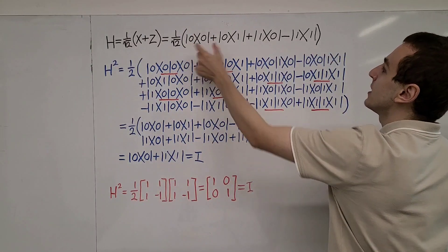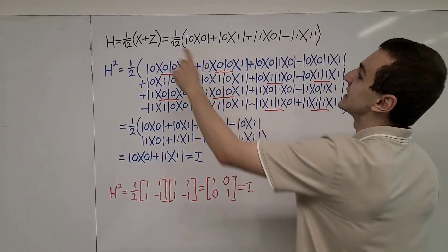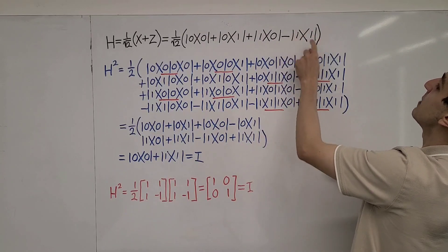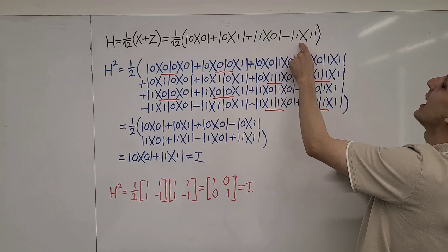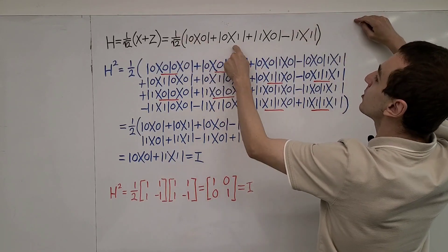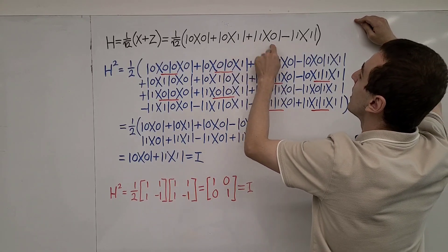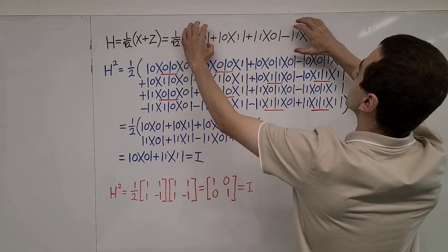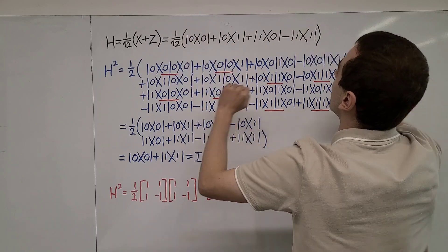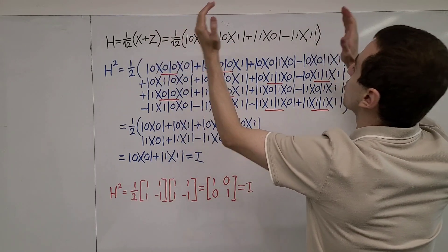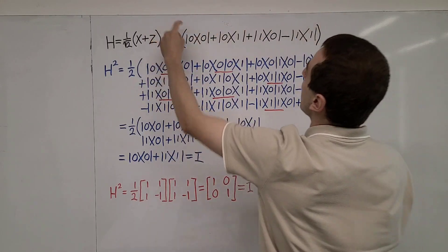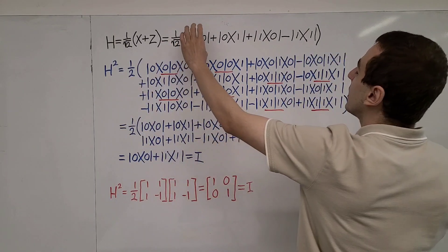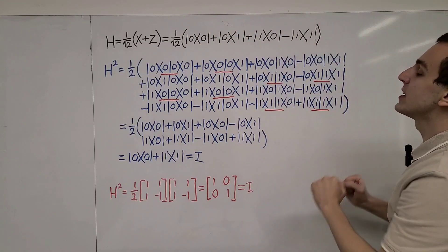This ket-bra combination and this ket-bra combination are equivalent to the Pauli Z gate. These are both diagonal entries in the matrix representation in the Pauli Z eigenbasis. These middle two terms, the |0⟩⟨1| and the |1⟩⟨0|, are equivalent to the Pauli X operator. This is where the bit flip comes from, and this is where the phase flip comes from. So now let's take this definition and apply it twice. If we apply all of this twice, the constant out the front gets squared, so we're going to have one half.